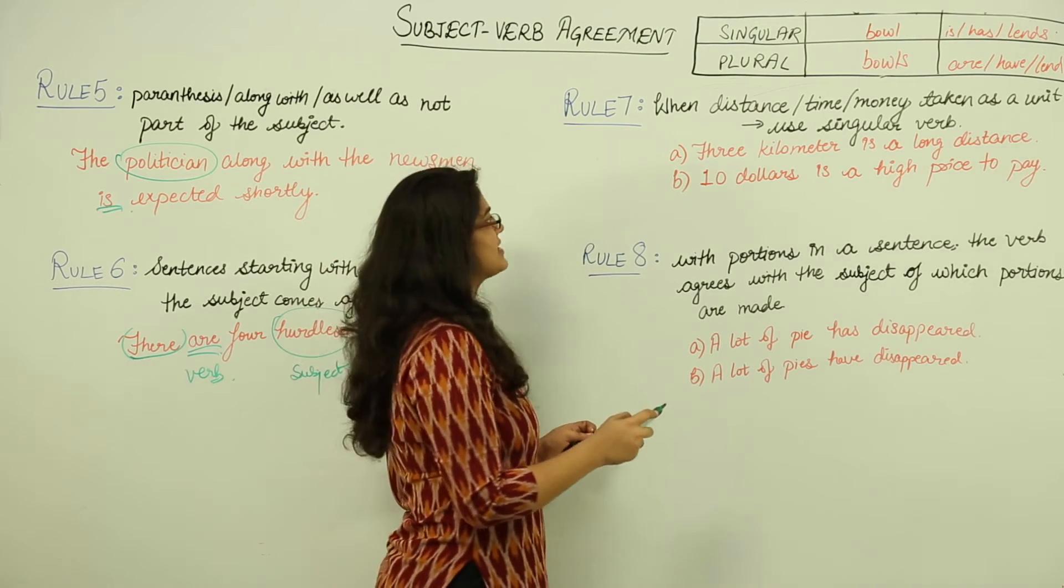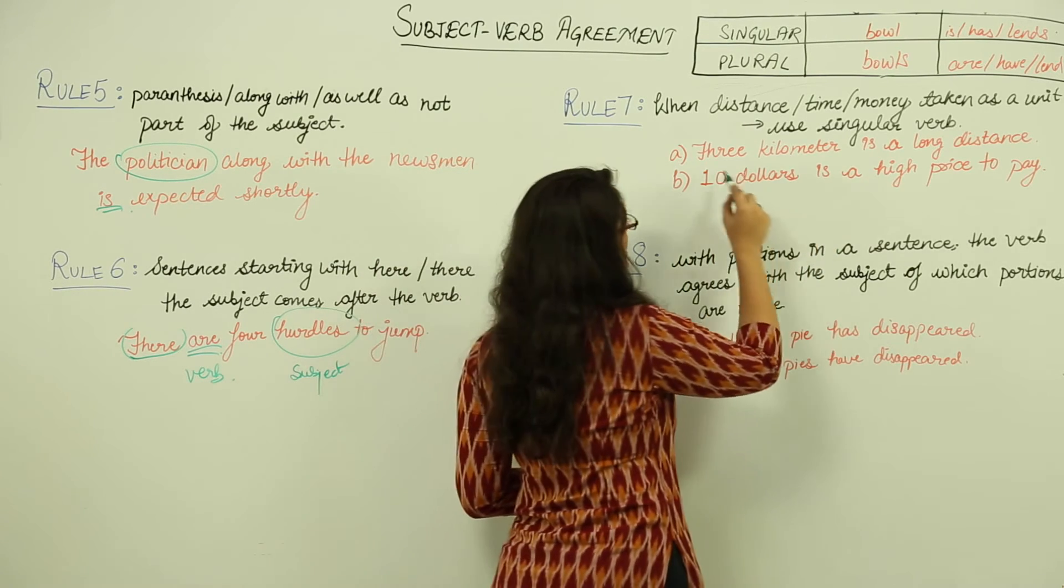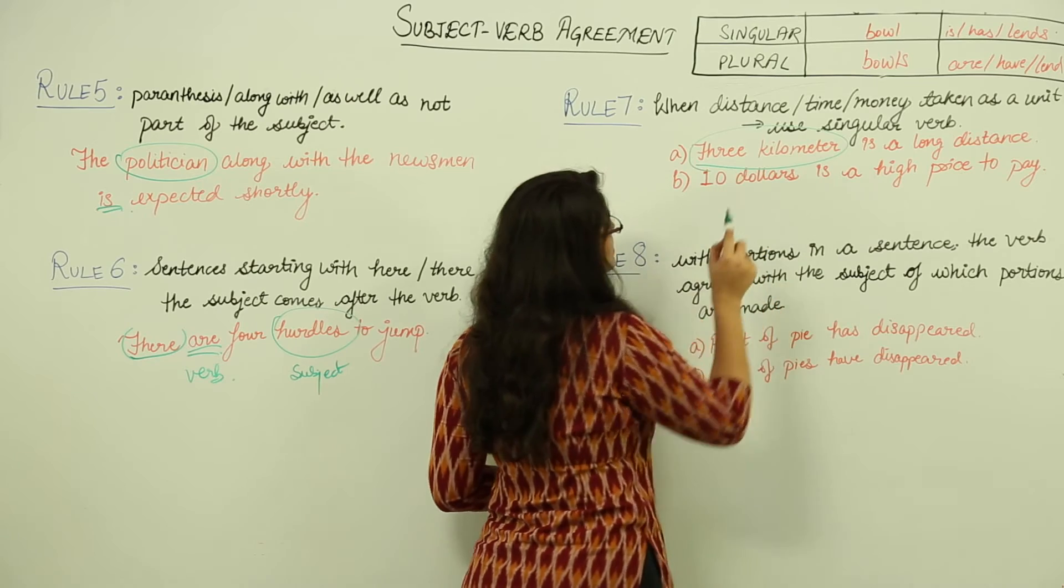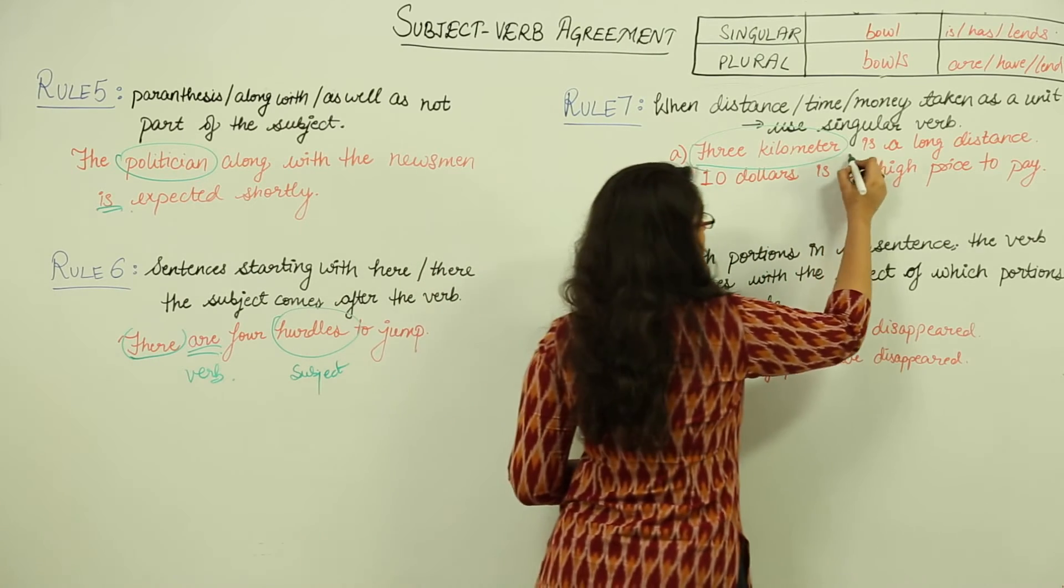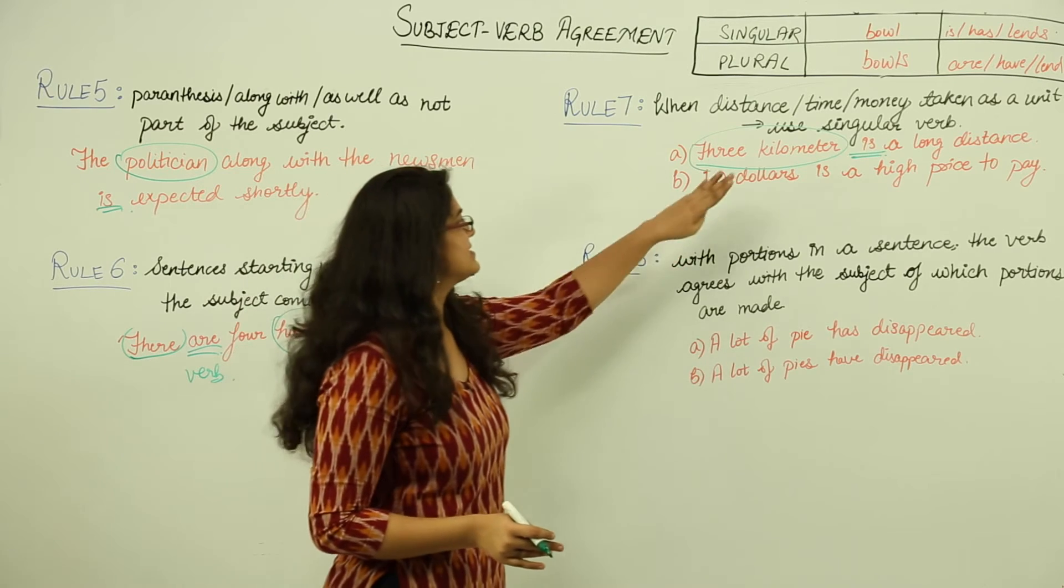But when we are talking of them as a unit, then we use a singular verb. So three kilometer here would become the subject, and 'is' is our verb. Both are singular in nature.